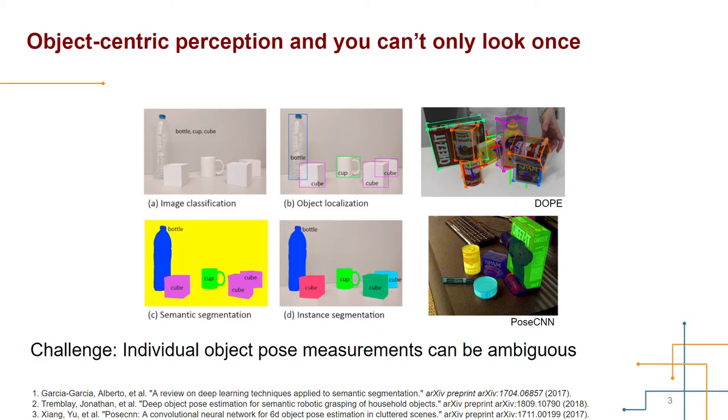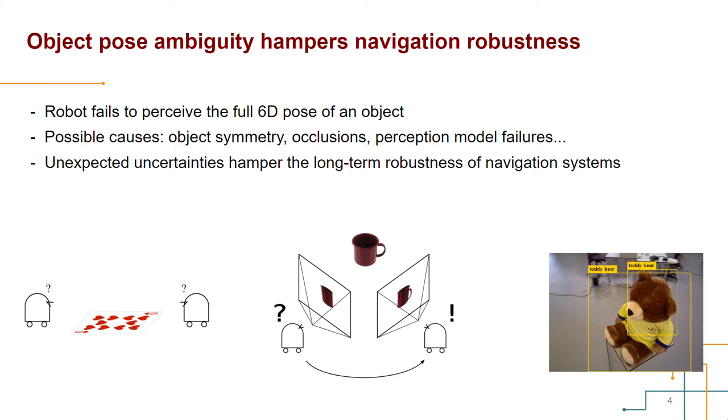However, we usually cannot rely on individual object pose measurements to recover the full 6D pose of an object. The single-shot pose estimates can have unexpected uncertainties, especially when the objects themselves possess ambiguities in their poses. In this work, we focus on the scenarios where the robot fails to perceive the full 6D pose of an object from an individual measurement.